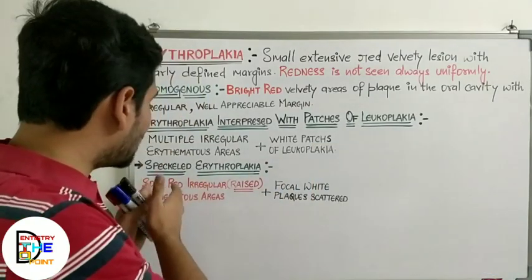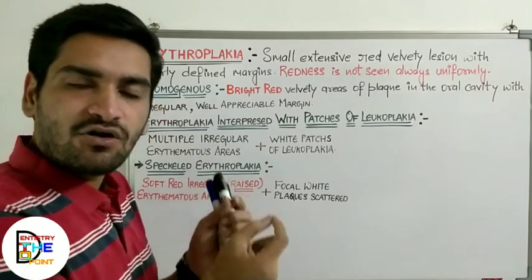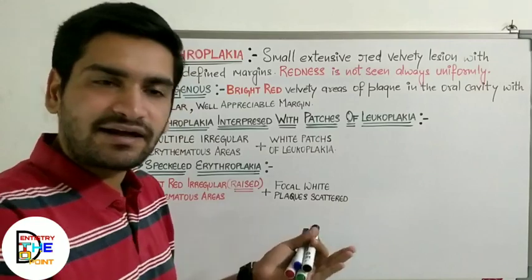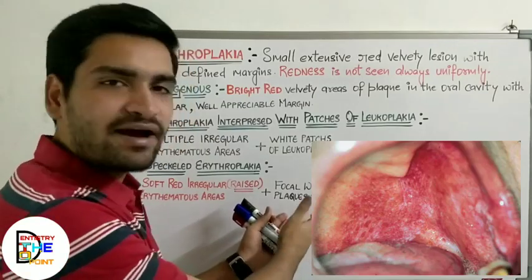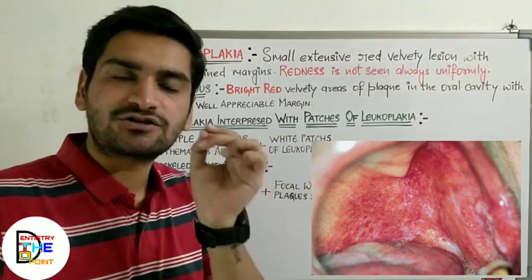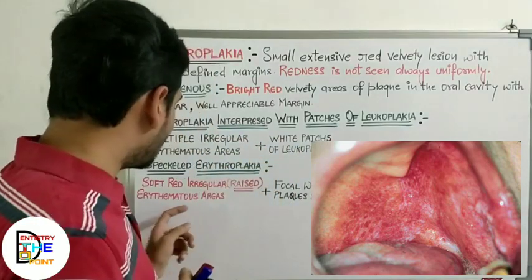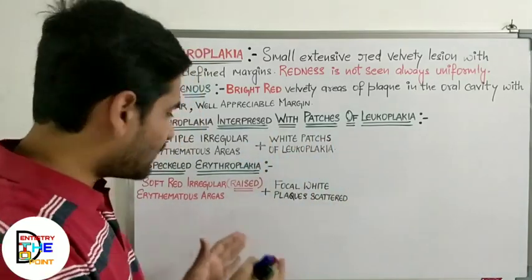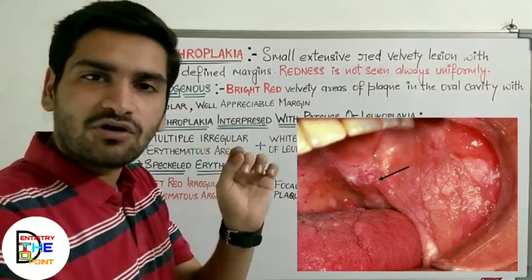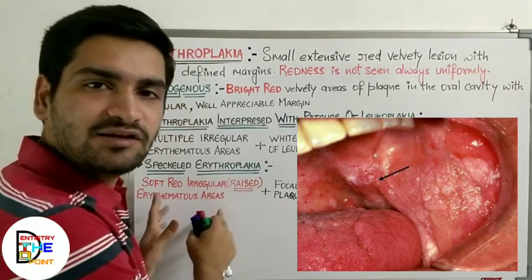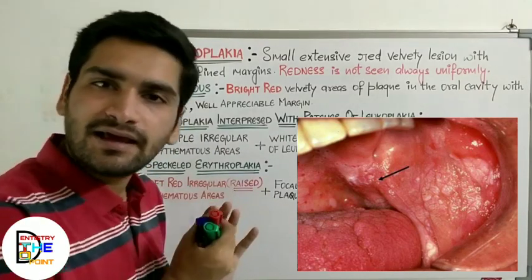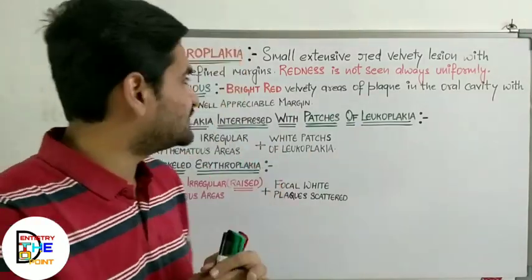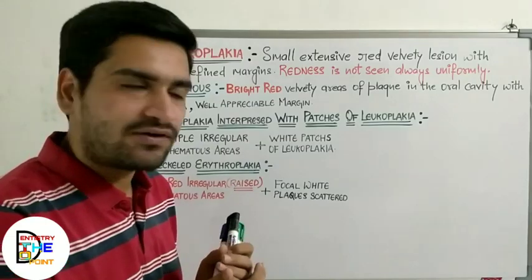The third form is speckled erythroplakia, where there are soft red raised or granular erythroplakia areas interfaced or scattered over a focal white plaque. So you have a focal white plaque, and over that you have small raised or granular red erythroplakia structures. These are the three clinical variants of erythroplakia: homogeneous, interfaced with leukoplakia, and speckled erythroplakia.